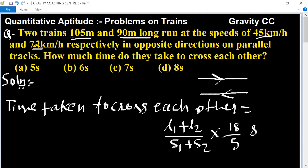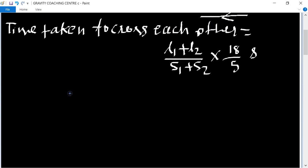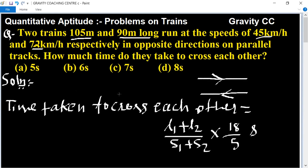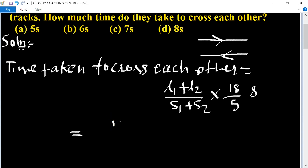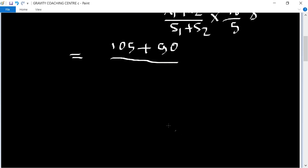So L1 is 105 and L2 is 90 meter and S1 is 45 and S2 is 72. So now we put 105 plus 90 upon 45 plus 72 into 18 upon 5.